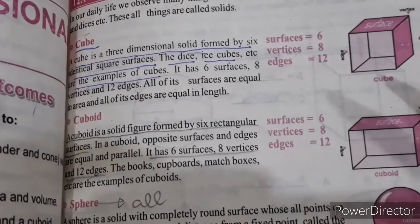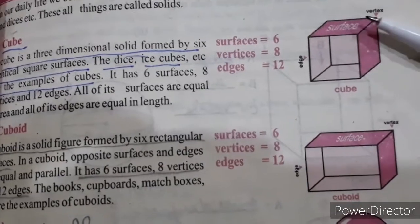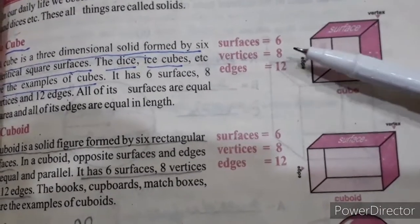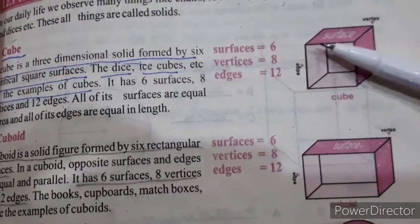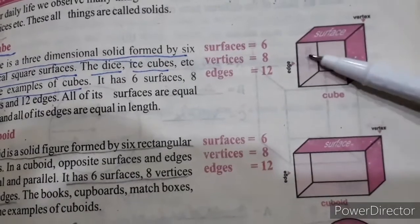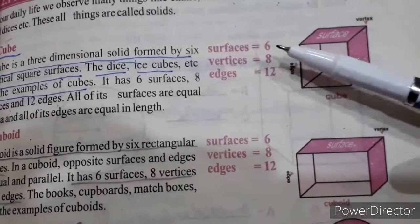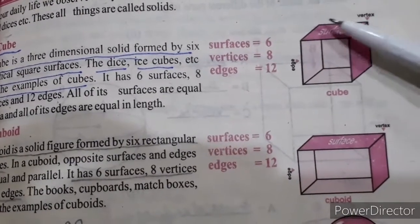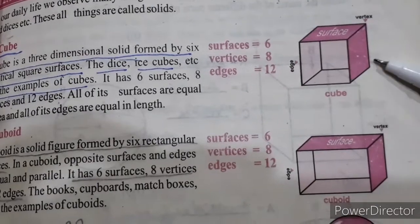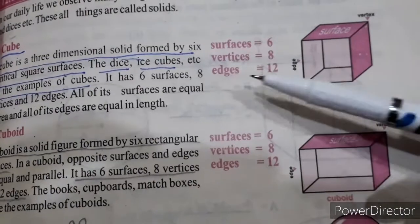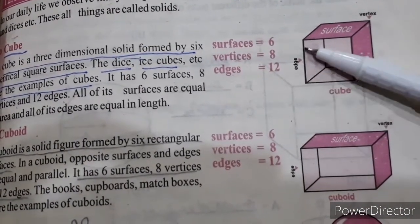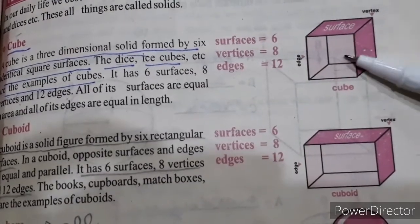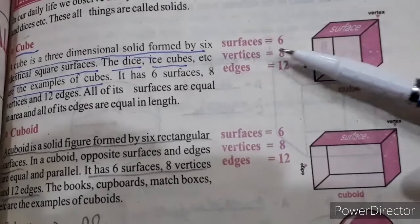You should know that a cube is always in a square shape. Let's count its surfaces: one, two, three, four, five, six — so it has six surfaces. Its vertices: one through eight — so eight vertices. Its edges: one through twelve — so twelve edges.